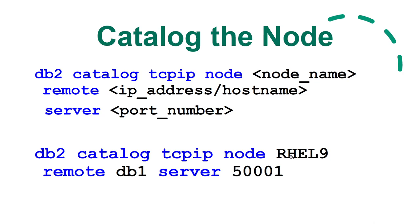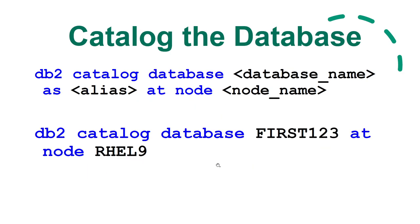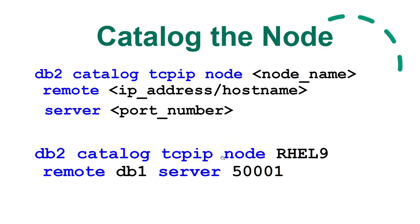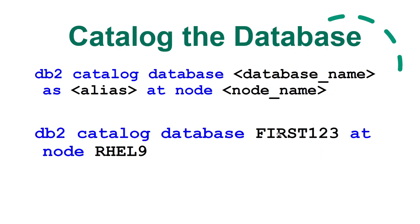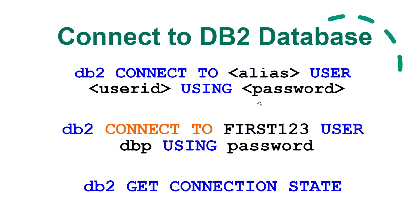After cataloging the node, run 'db2 catalog database [database_name] as [alias] at node [node_name]'. The node name must match what you used in the catalog TCPIP node command. The 'as alias' is optional — if not specified, the database name itself becomes the alias. You must run catalog node first, then catalog database — the order is sequential. Finally, connect using 'db2 connect to [database] user [user] using [password]' and verify with 'db2 get connection state'.